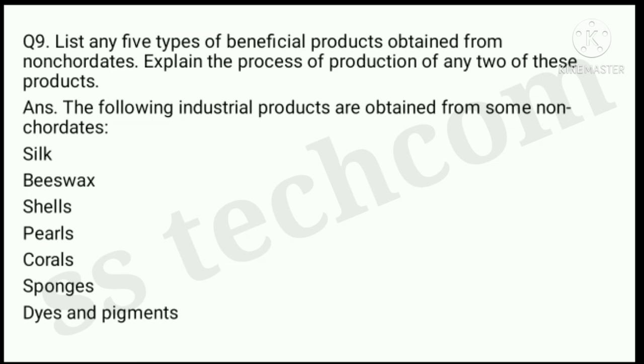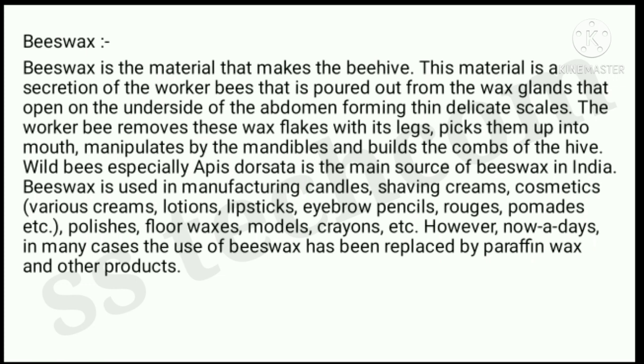Question number 9: list any five types of beneficial products obtained from non-chordates. Explain the process of production of any two of these products.